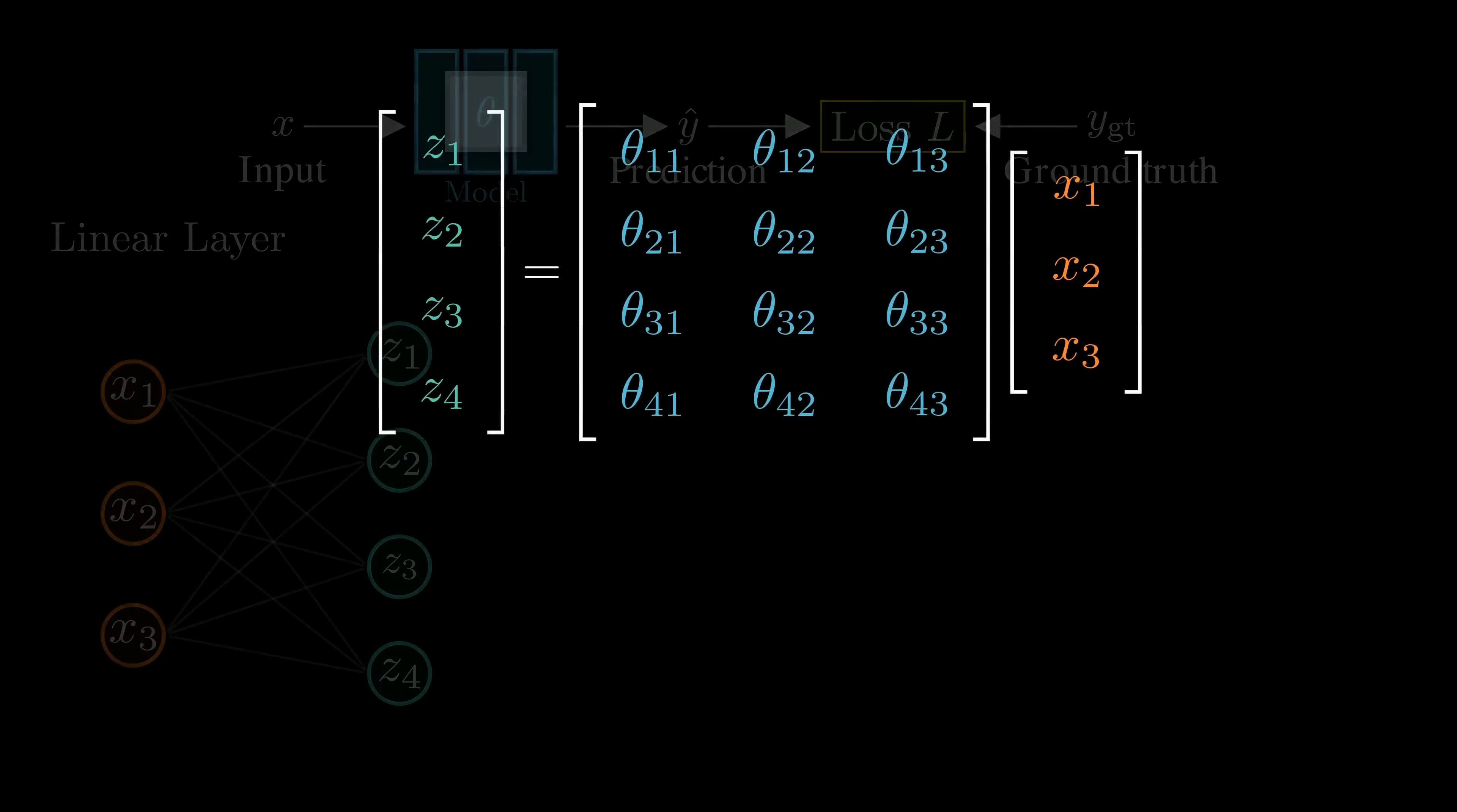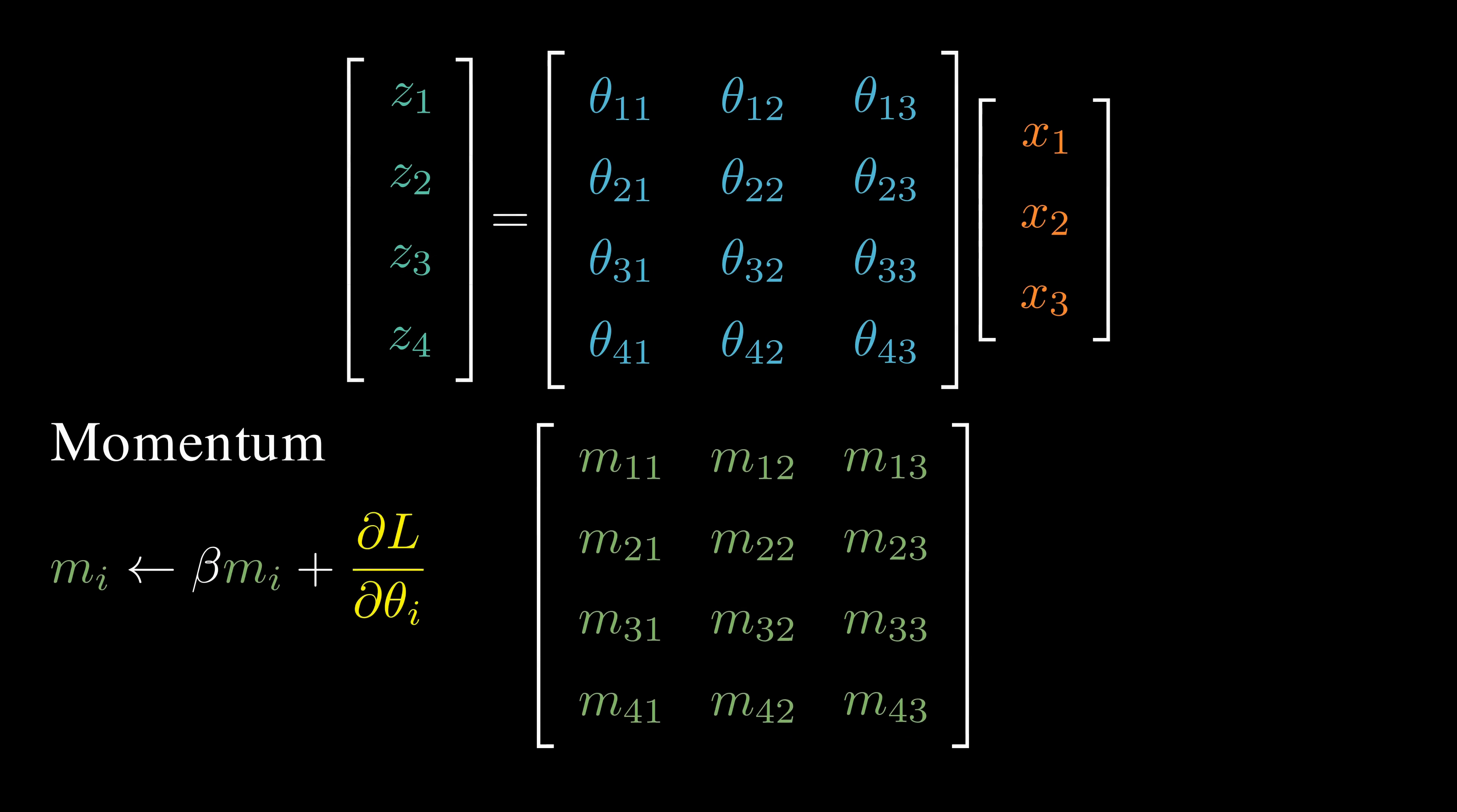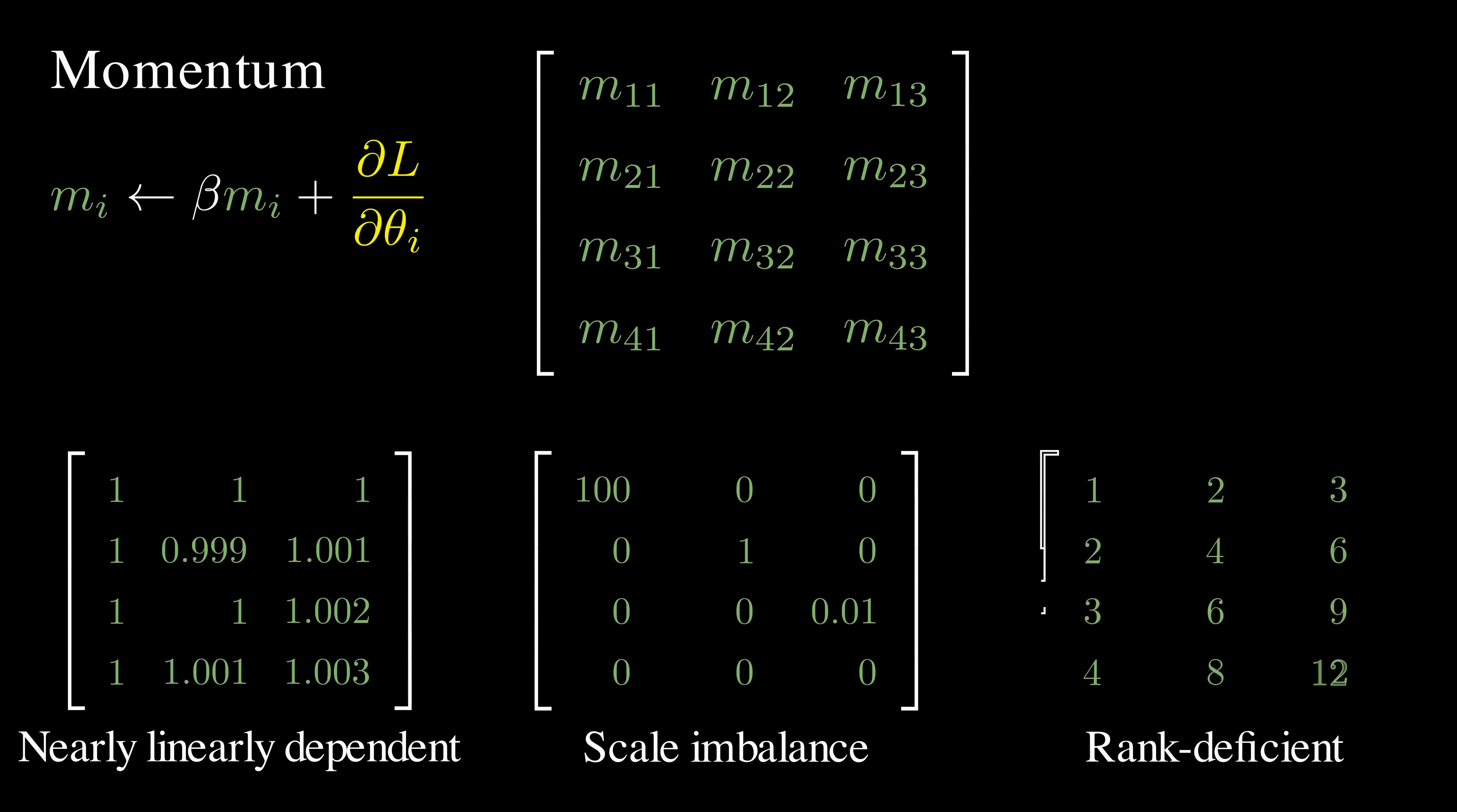To update the weights, we first calculate the momentum for each parameter. But with vector-based optimizers like Adam, the momentum for a linear layer, naturally a 2D matrix, tends to become almost low rank in practice. This means that only a small number of dominated directions really drive the updates, while many other directions contribute very little.